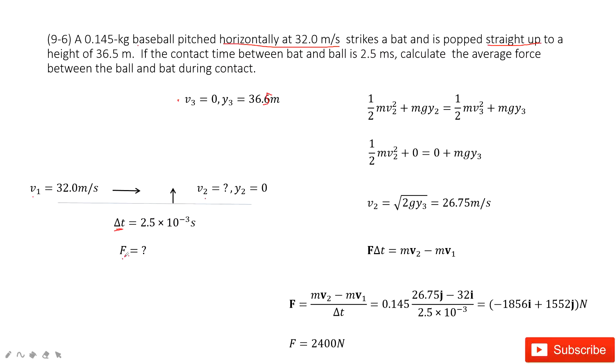So that means if we want to find the force, we need to know the change of the momentum divided by delta t. Now, the final momentum unknown. Initial momentum easy. Next one, how can we find the final momentum?